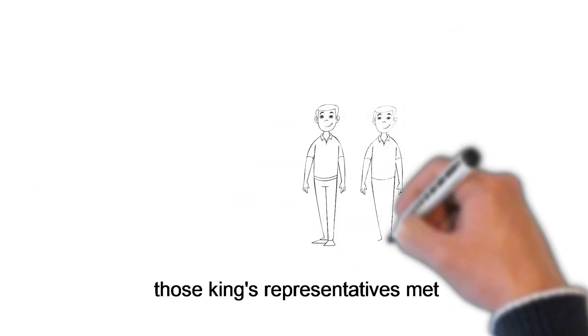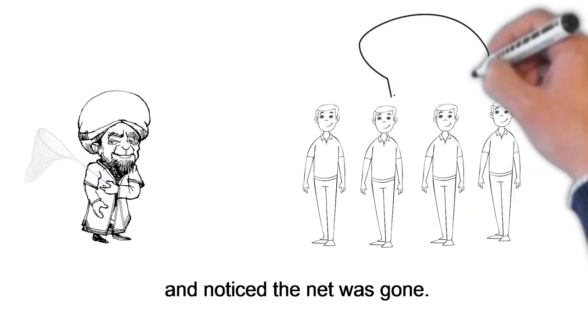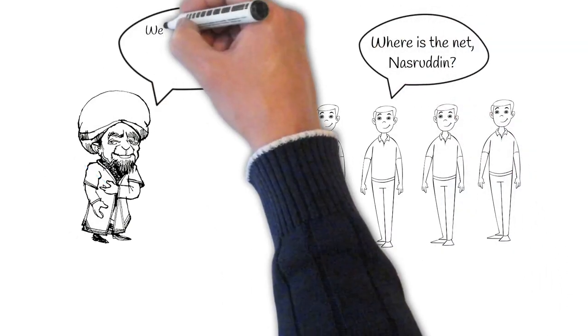Shortly afterwards, those king's representatives met Nasruddin again and noticed that the net was gone. Where is the net, Nasruddin? They asked.